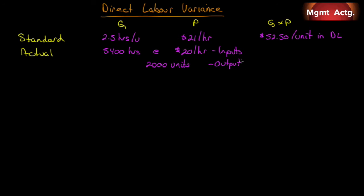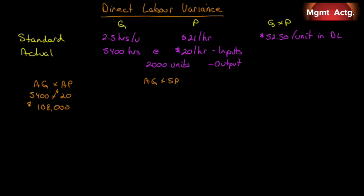First column, AQ times AP — actual quantity times actual price. We're isolating the effect of price only here. 5,400 hours times $20 is $108,000. Now we multiply that actual quantity by the standard price: what should we have paid? It's 5,400 hours times $21 for a total cost of $113,400.